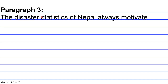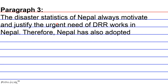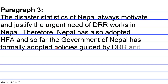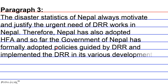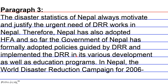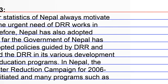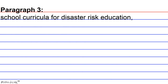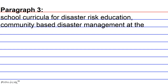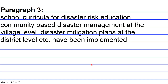The disaster statistics in Nepal always motivate and justify the urgent need for DRR works in Nepal. Therefore, Nepal has adopted HFA, and the government of Nepal has formally adopted policies guided by DRR and implemented DRR in its various development as well as education programs. In Nepal, the World Disaster Reduction Campaign of 2006-2007 was initiated, including programs such as school curricula for disaster risk education, community-based disaster management at the village level, and disaster mitigation plans at the district level.